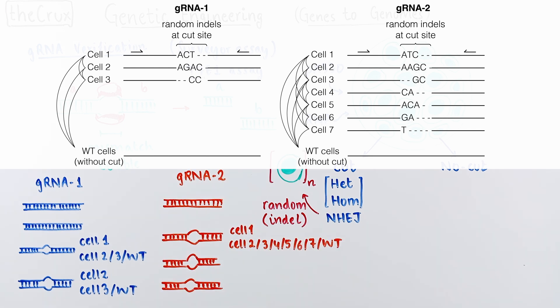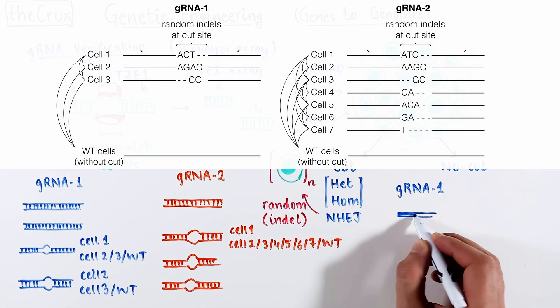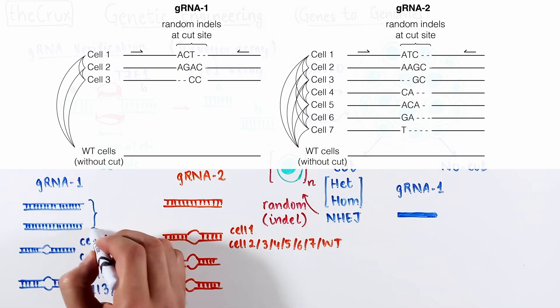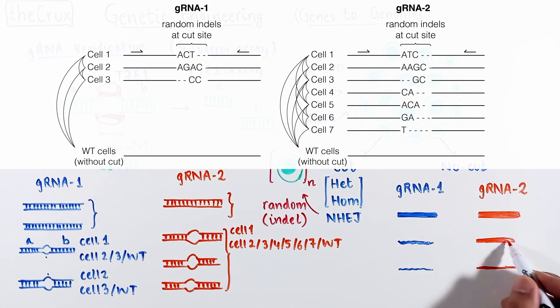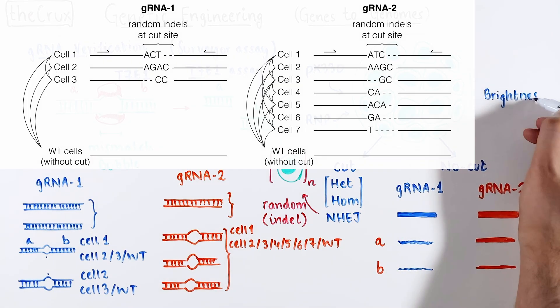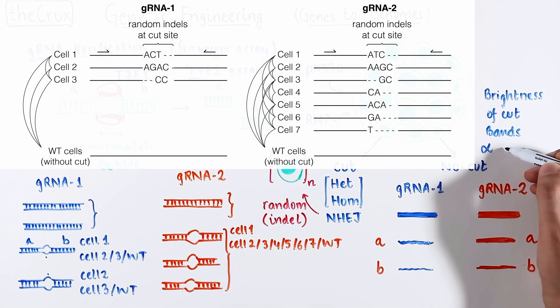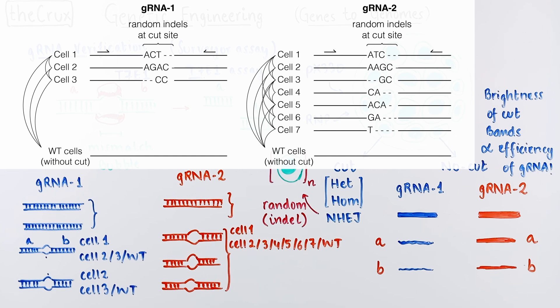After annealing, you digest the products, either using surveyor nuclease or T7 endonuclease, and run the digested products on a gel. The annealed duplexes where a mismatch does not exist will not be cut by the nuclease. But if there is a duplex with a mismatched bubble, it will be split into two parts. The amount of brightness of the cut products is directly correlated to the efficiency of the guide RNA. So, from this example, if guide RNA2 gives you brighter A and B bands in comparison to guide number one, you can infer that there are more unique cuts or indels generated, meaning that the second guide is better.